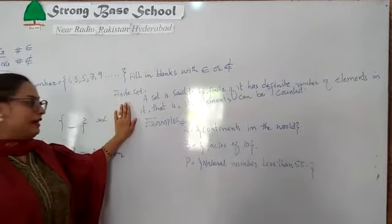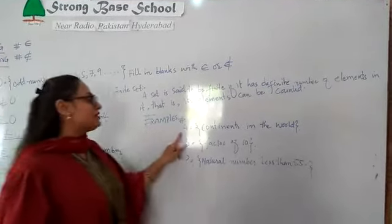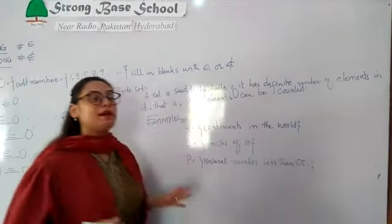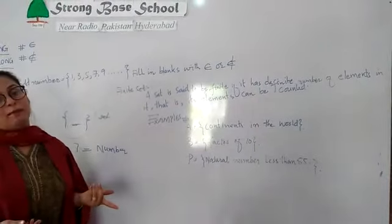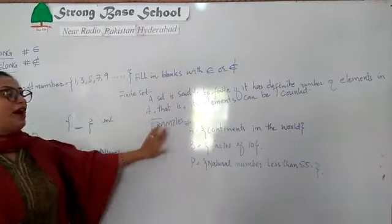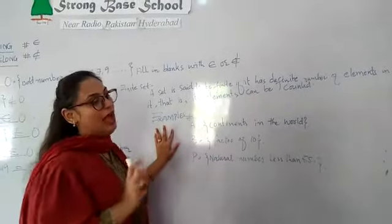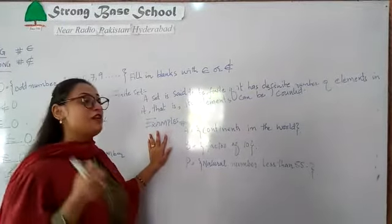So it is called a finite set. For example, we have a set of continents in the world. We have a proper set that we know - we have continents in the world, and we know the continents.